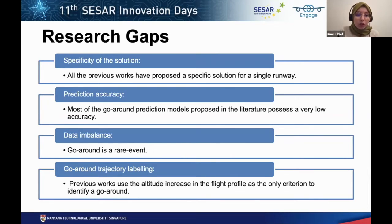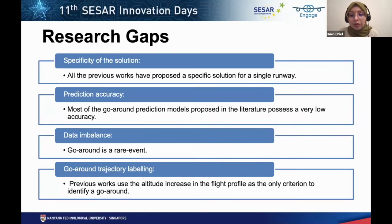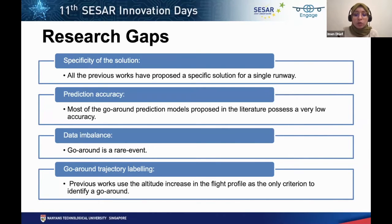The fourth research gap is go-around trajectory labeling — how to identify a go-around trajectory from flight data. Previous work typically used altitude increase as the only criterion. However, flights in the approach phase may increase altitude for other reasons, such as correcting the approach profile or following ATC instructions. Also, go-arounds initiated close to the missed approach altitude may not produce a large altitude increase. Therefore, altitude change alone should not be the only criterion, and other criteria should be investigated.